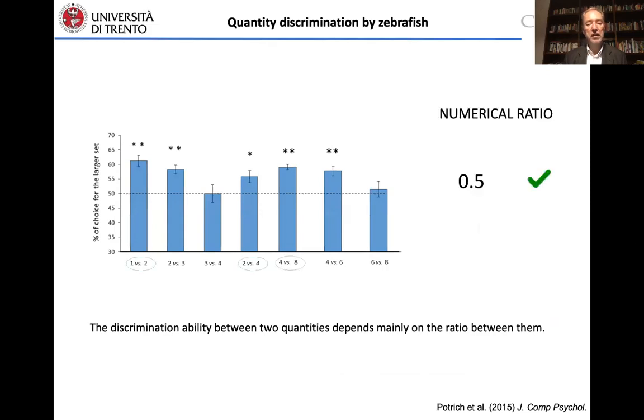And these are some of the results we obtained with different ratios. And you can observe for instance that if the numerical ratio is 0.5, so quite good, quite easy, for instance one versus two but also two versus four or four versus eight, fish are quite good at selecting the group with the larger numerosities.